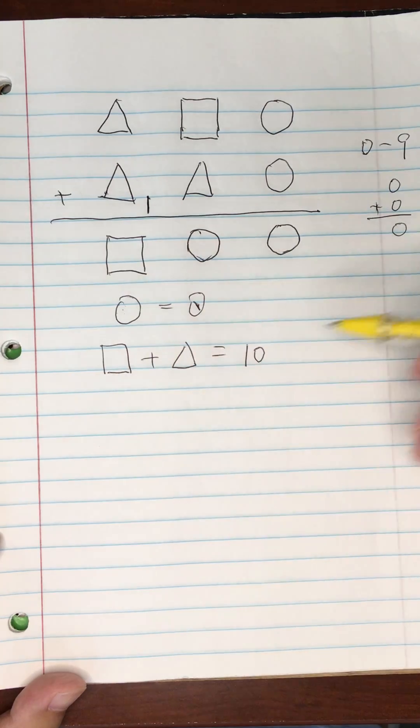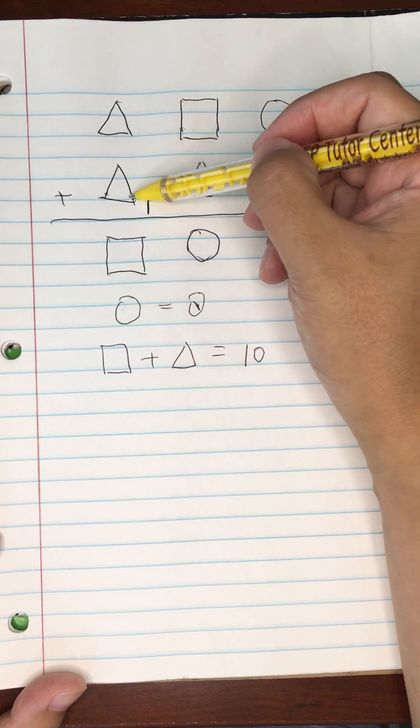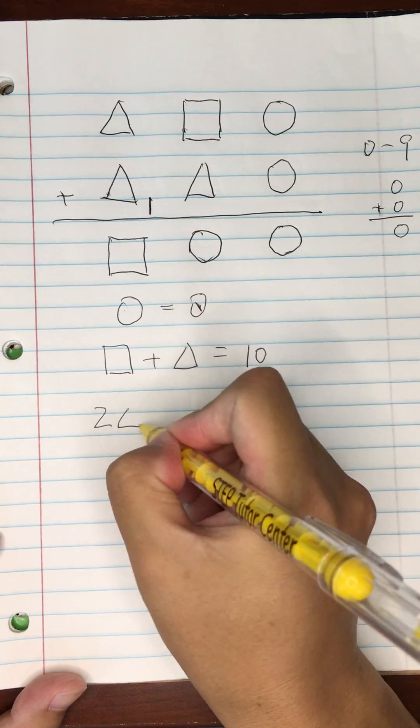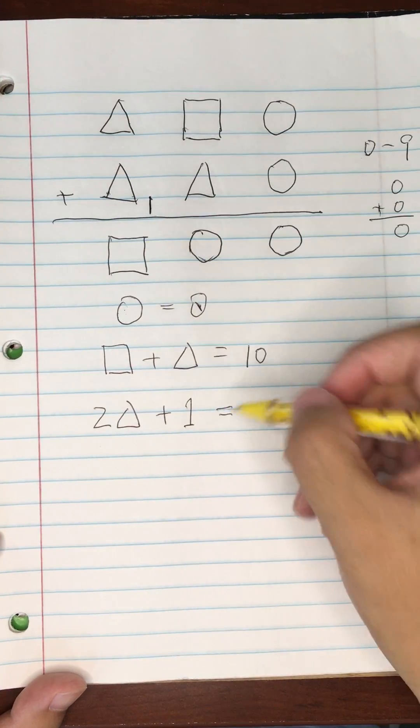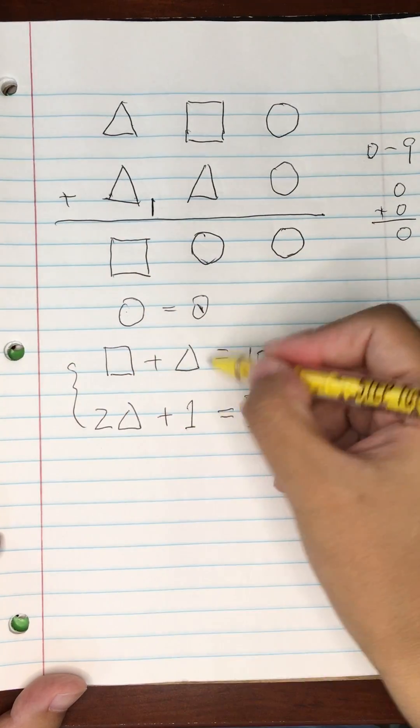At this point, we have one equation for the square and triangle. Then for the last column, that's triangle plus triangle plus one, so two triangles plus one equals square. Now we've got two equations for the triangle and square.